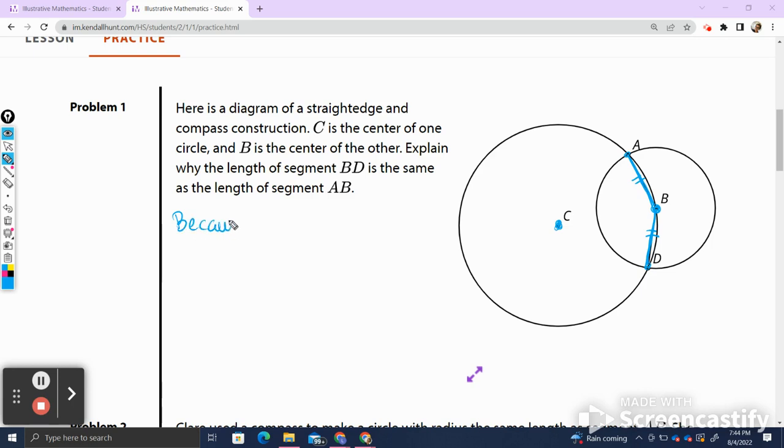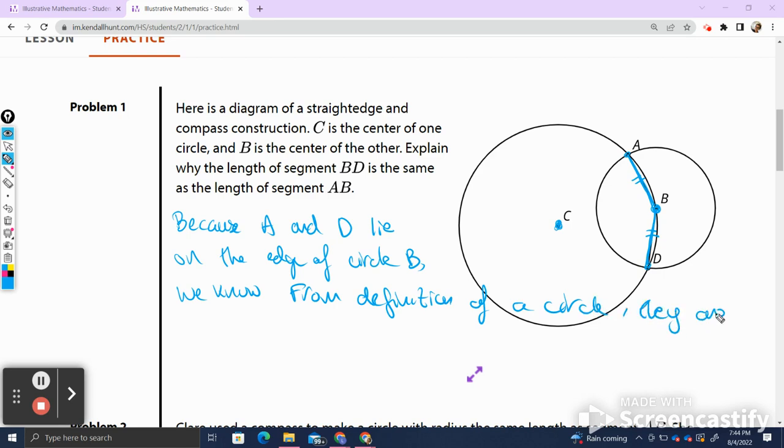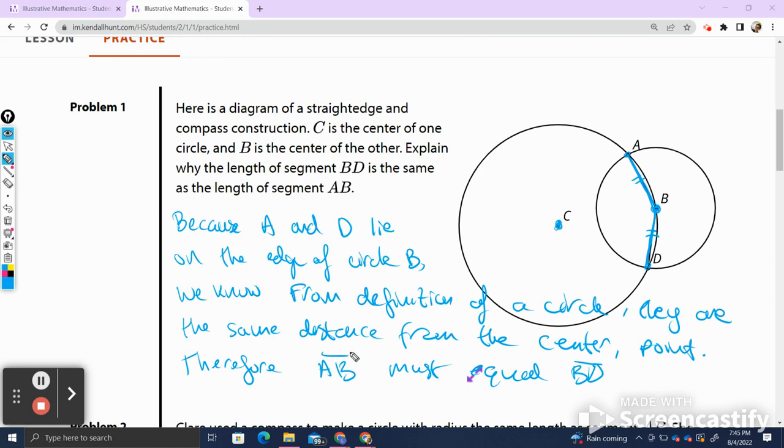So let's write that out. Because A and D lie on the edge of circle B, point B, we know from the definition of a circle, they are the same distance from the center, point B. Therefore, AB must equal BD. I'm going to draw my line segment lines. Now, if you need a second to write this down or go over it, take a second, pause the video, and rewind. Let's move on to the next question.